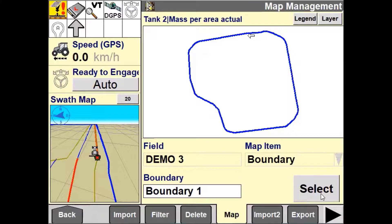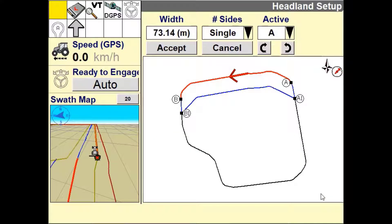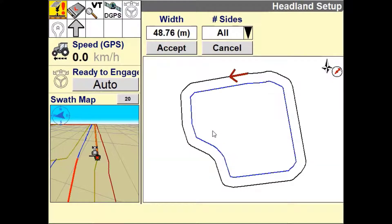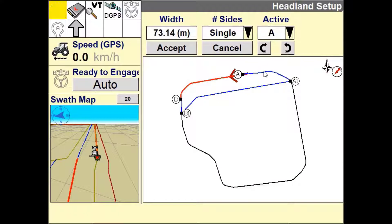Use the width option to define how wide your headland needs to be. There are three default options which are either one implement width, two implement widths or three implement widths from the boundary. The other option you have is to define a custom distance from the field boundary.